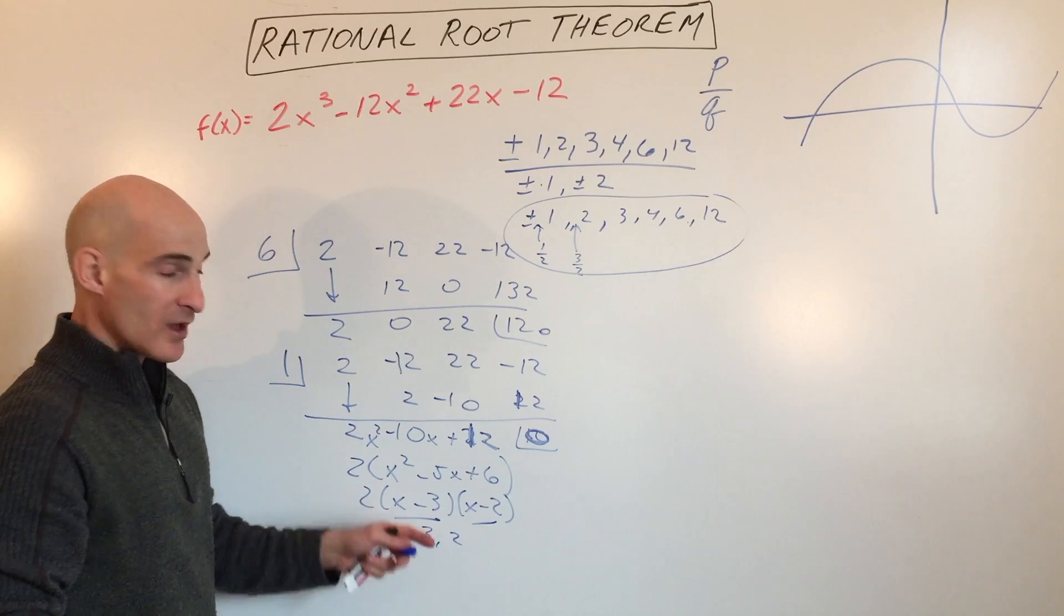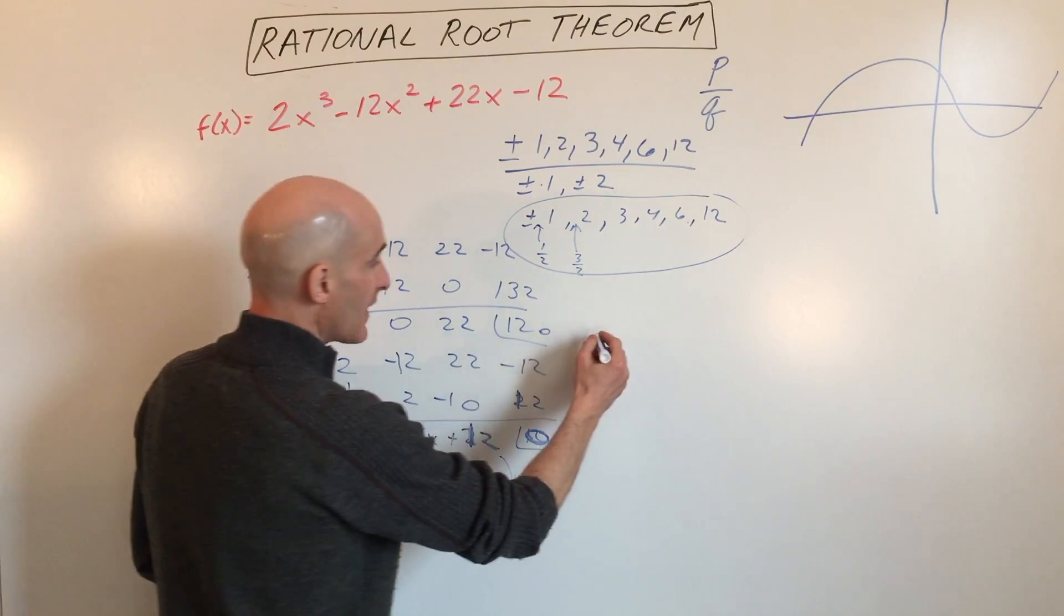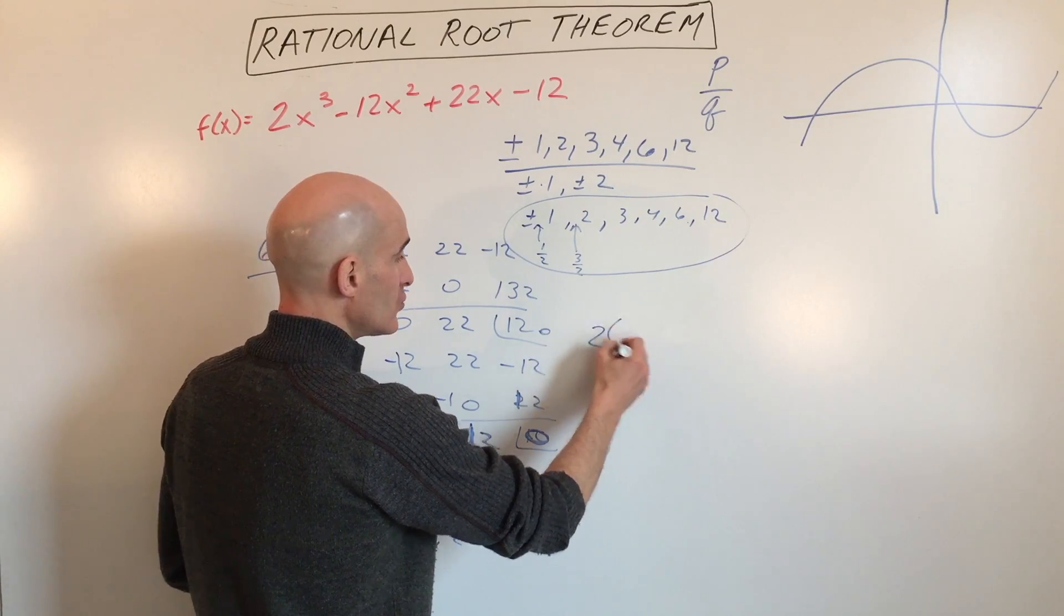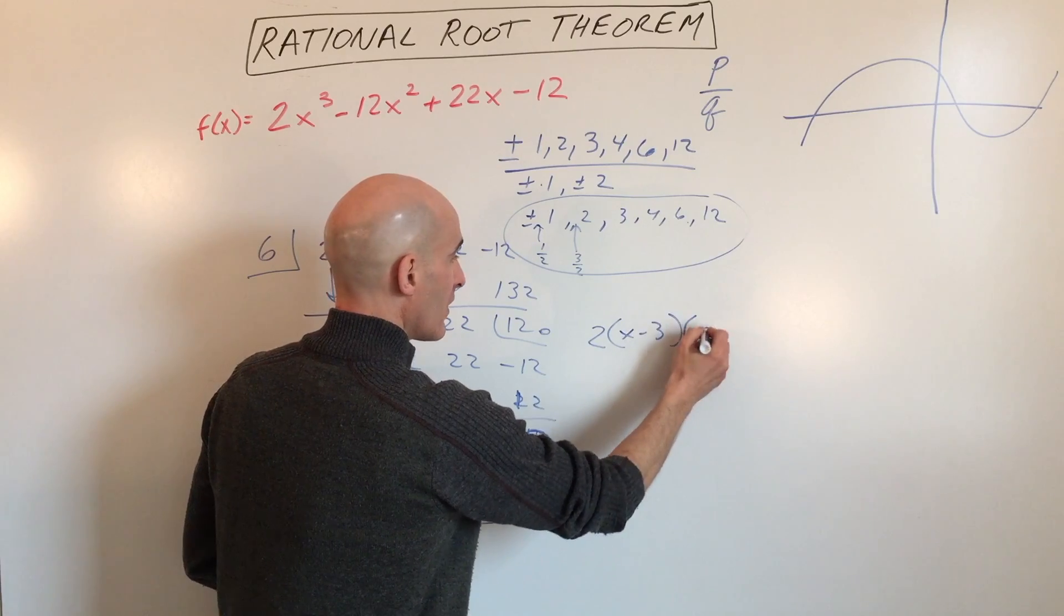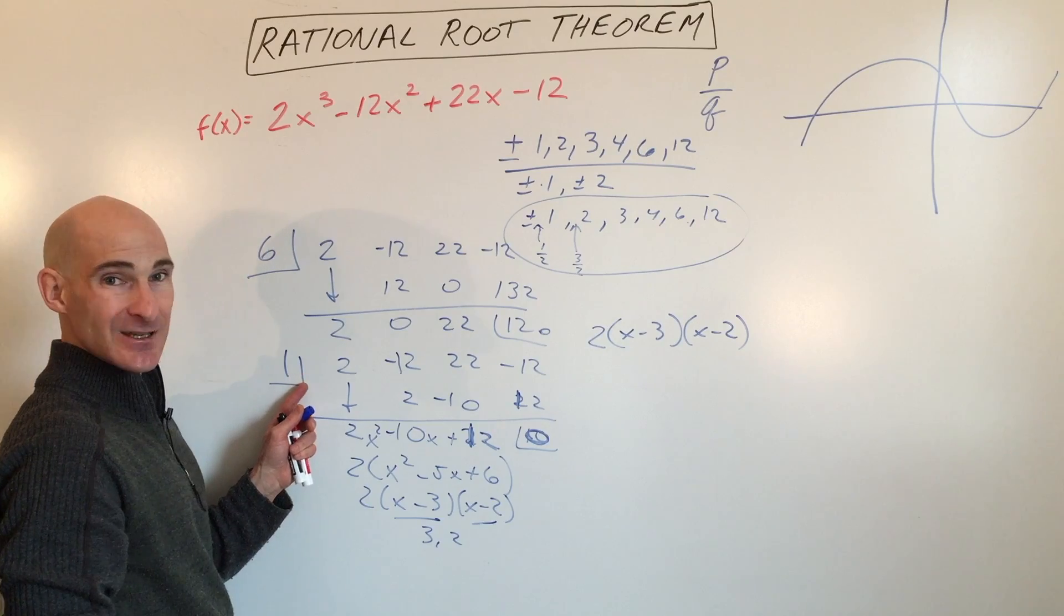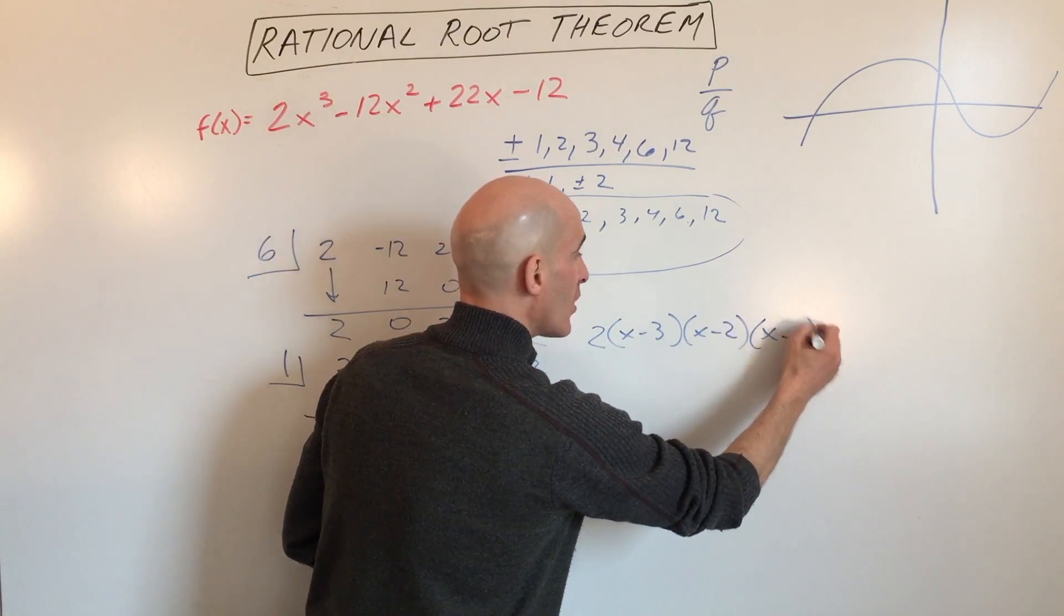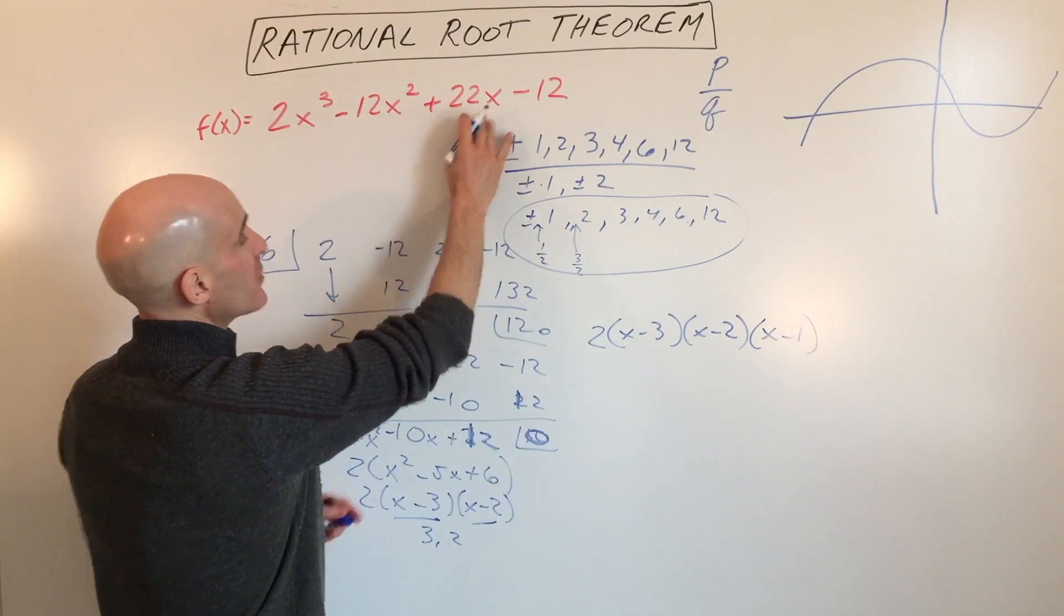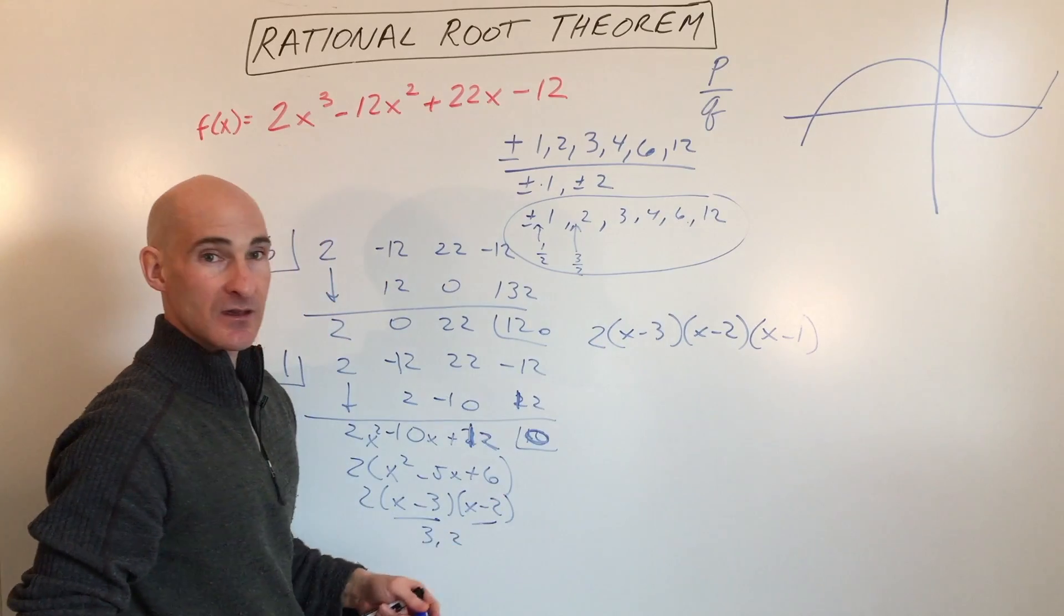So we have our zeros: 1, 2, and 3. What that means is you can write this in factored form: 2 times x minus 3 times x minus 2, and 1 was a zero so x minus the zero is a factor, x minus 1. This is our polynomial here in factored form. You set the factors to 0, you get the zeros, the x-intercepts.